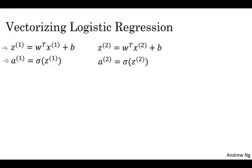Let's first examine the forward propagation step of logistic regression. So if you have m training examples, then to make a prediction on the first example, you need to compute that and compute z using this familiar formula. Then compute the activation, compute y hat in the first example. Then to make a prediction on the second training example, you need to compute that. Then to make a prediction on the third example, you need to compute that and so on. Then you might need to do this m times if you have m training examples. So it turns out that in order to carry out the forward propagation step, that is to compute these predictions on all m training examples, there is a way to do so without needing an explicit for loop.